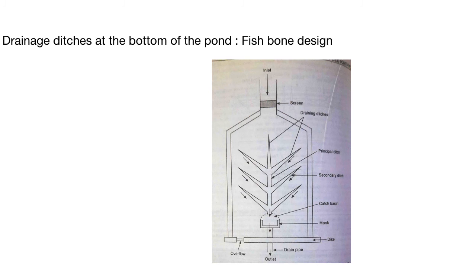After the ponds are dug out and all elements are built, the pond bottom is compacted and then covered with a specially designed network of drainage ditches. A principal ditch is dug in the center of the pond bottom, sloping towards the monk. A series of obliquely arranged secondary ditches open into this principal ditch. The bottom of each ditch is approximately half a meter wide, the sides are sloping, and the depth varies from 30 to 40 centimeters. The spacing between secondary ditches depends on soil compactness: 10 meters for compact ground and up to 50 meters for loose or impervious soil.